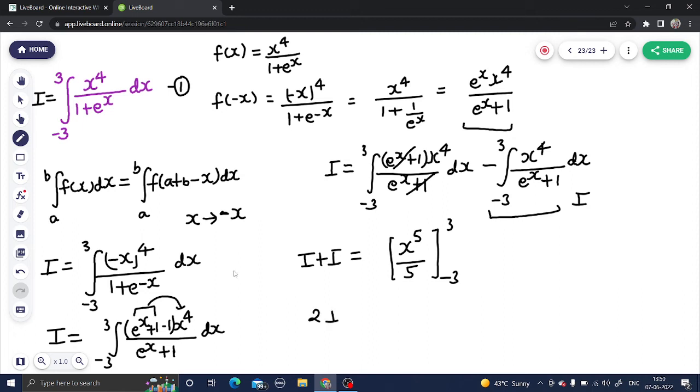2i equals to 1 by 5 I can take common, x power 5. 3 power 5 is upper limit minus lower limit is minus 3 power 5. 2i equals to 1 by 5, 3 power 5 is 243. This is 243 minus of this will also be minus of 243.